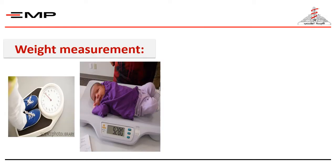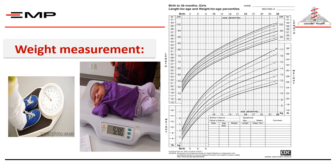The weight is measured using a scale — whether a baby scale if the child cannot stand steady, or the standing scale if the child can stand. For example, if we have a girl 9 months old and her weight is 9.280 kilograms, her weight will be on the 75th centile, which is normal for age.